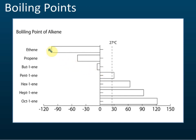From the graph, we can see that when the number of carbons inside the alkene increases — from two carbon, three carbon, four carbon, five carbons — the boiling point keeps increasing, from about negative 100 degrees Celsius up to about 120 degrees Celsius. So the first thing you need to know: when the number of carbons increases, the boiling point increases.